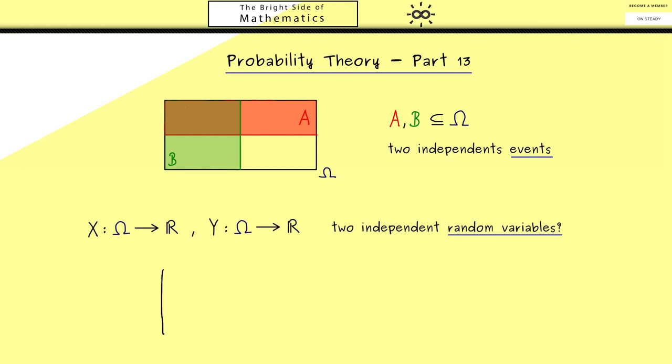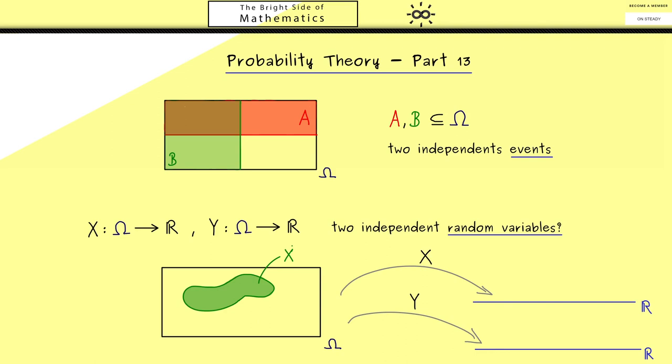Indeed, this is not hard to answer because X and Y map omega to the real number line. Therefore we just have to look at pre-images of X and Y to get a collection of events in omega. In fact, we know that the pre-images of random variables are important because they are by definition measurable.